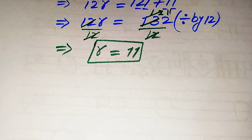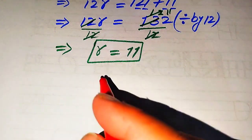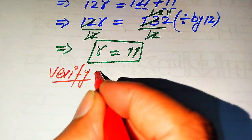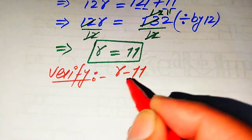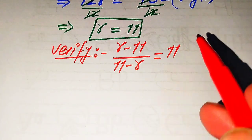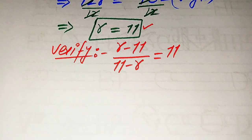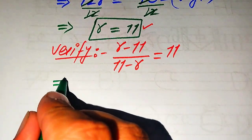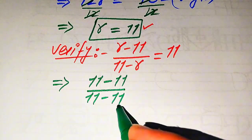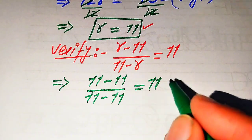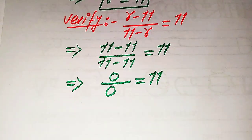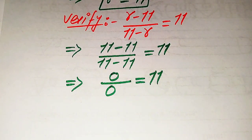Now we need to verify whether this value of r is a solution or an extraneous root. We copy the given equation: r minus 11 divided by 11 minus r equals 11. We substitute r equals 11 into the left hand side, giving us 11 minus 11 divided by 11 minus 11 equals 11, which becomes 0 over 0 equals 11.